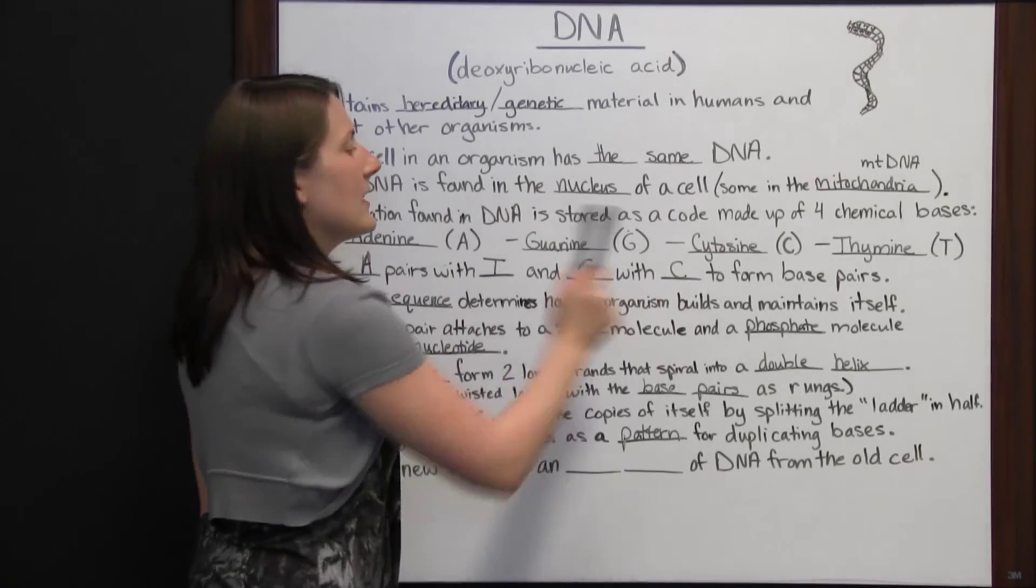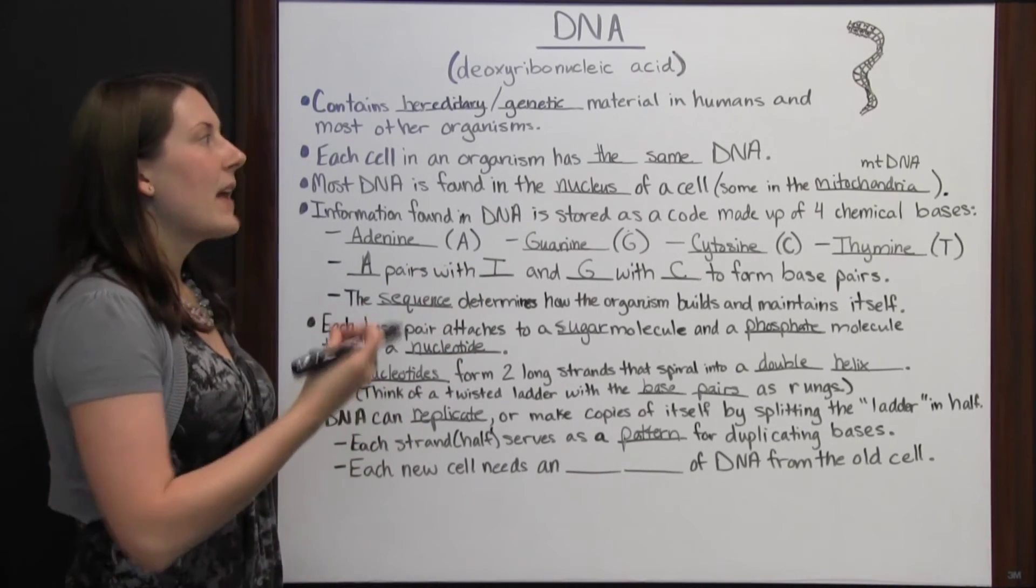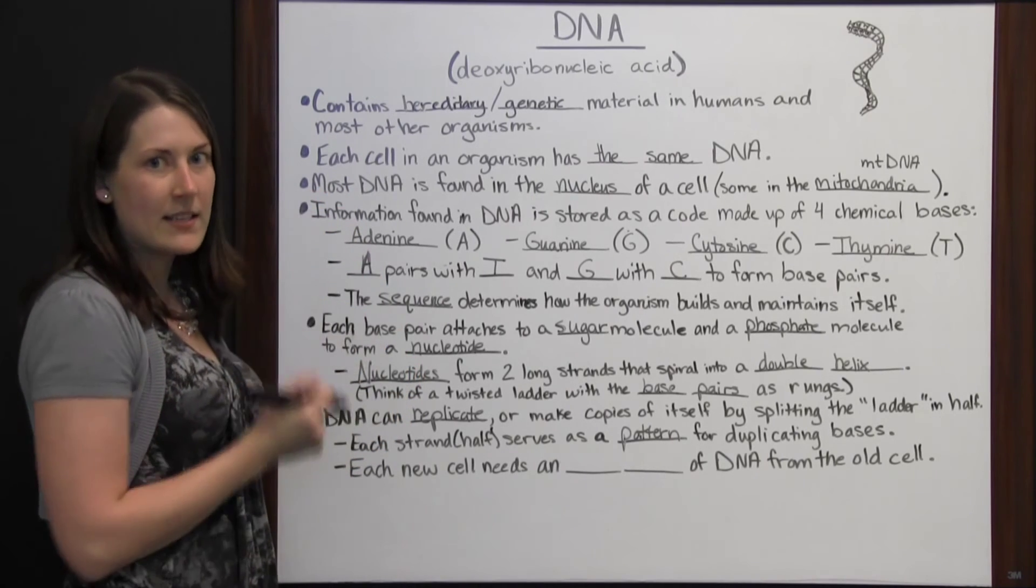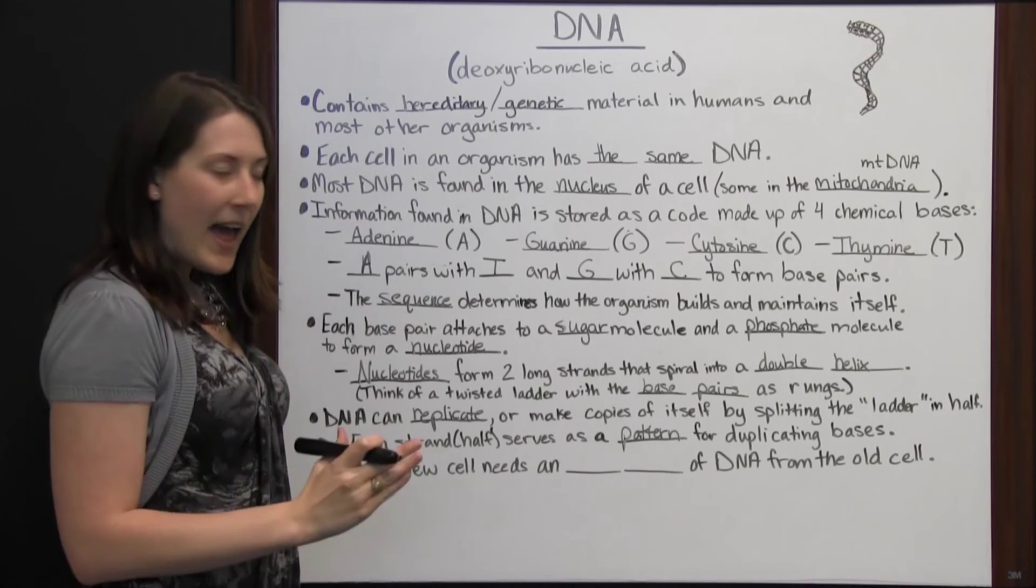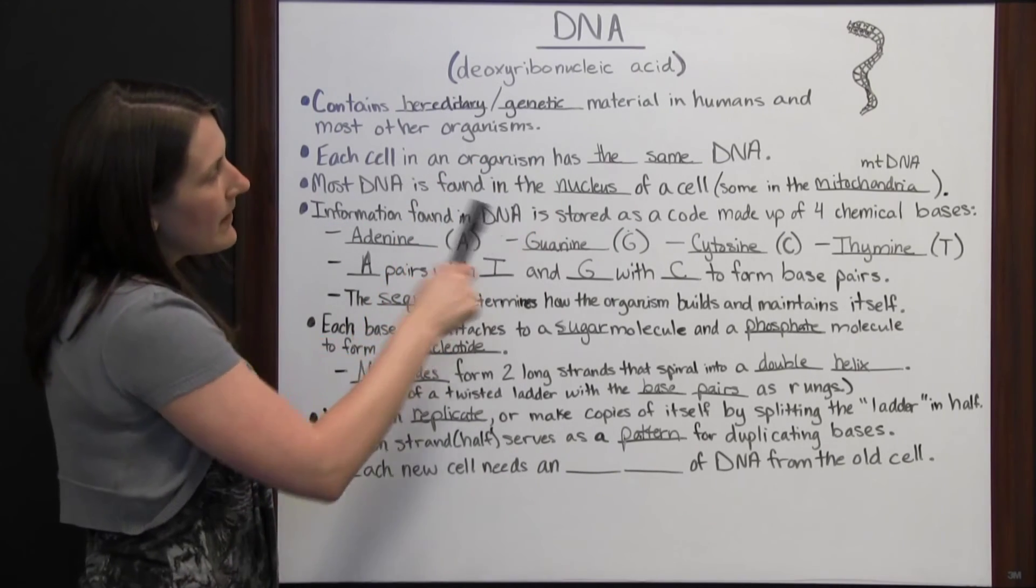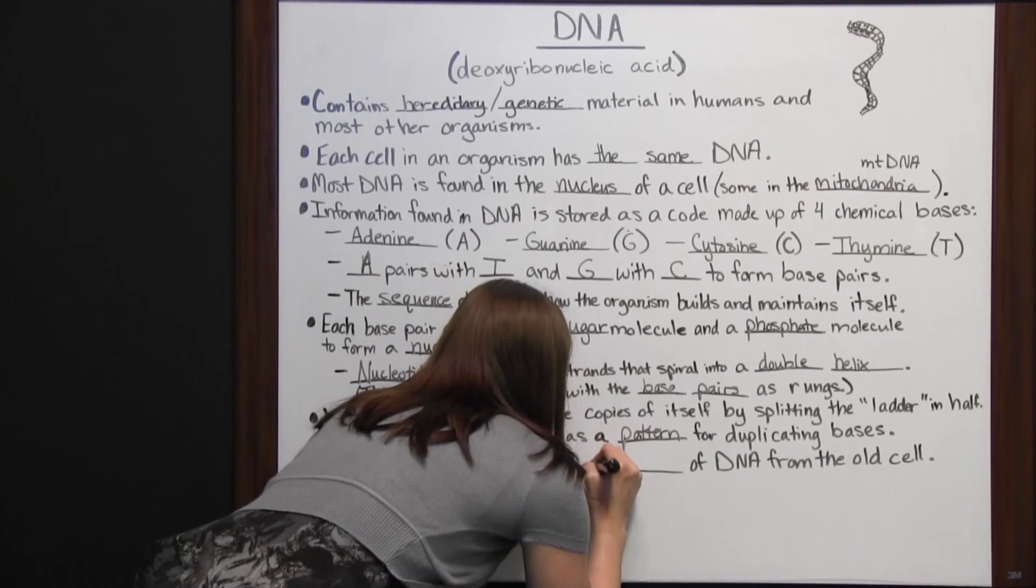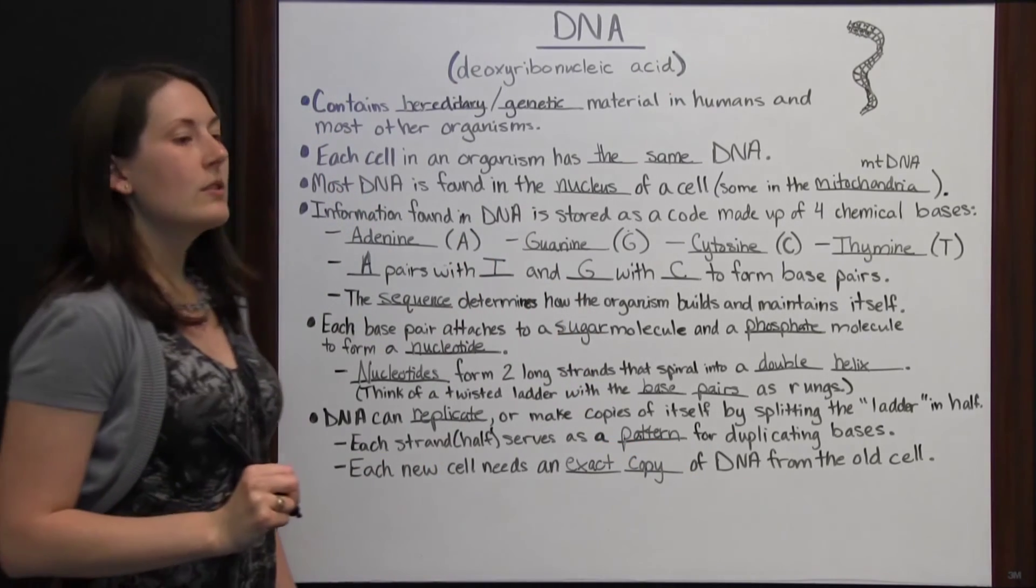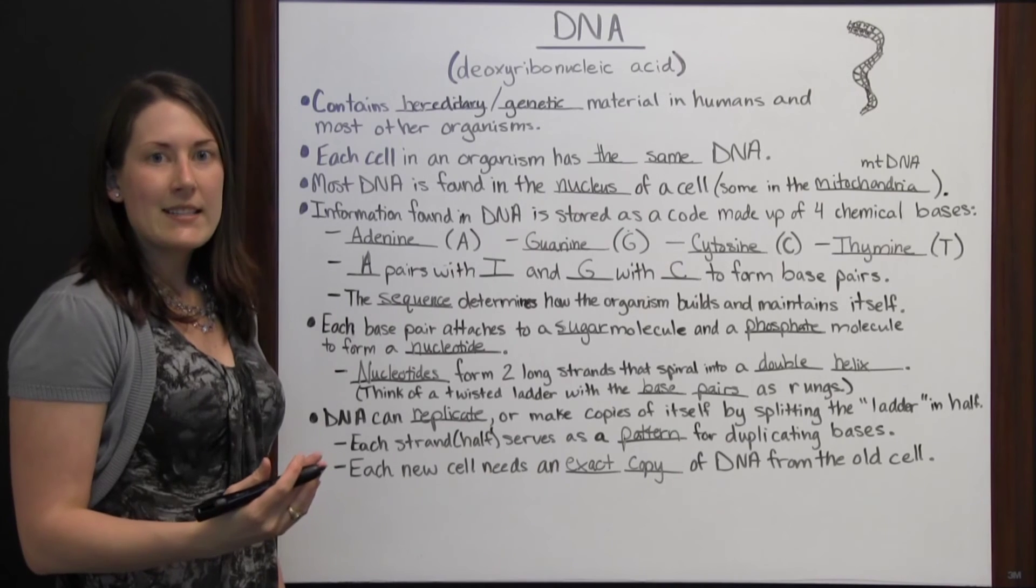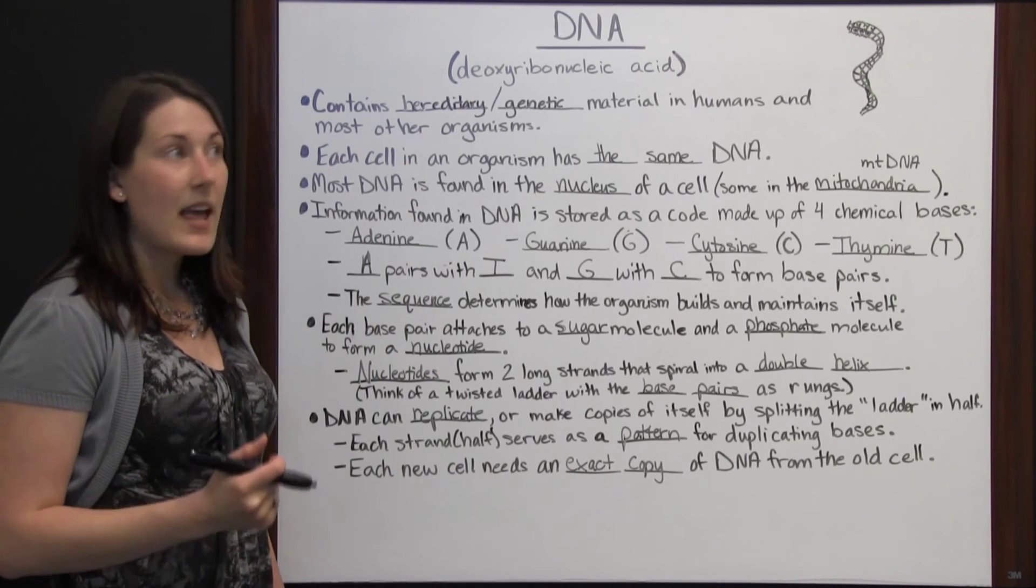Since in DNA, adenine and thymine always pair together and guanine and cytosine pair together, you will know, or the cell will know, okay, I've got this DNA, I've only got half of it, but it's a pattern. If I have adenine, I need to add thymine to the other side. If I've got cytosine, I need to add guanine to the other side. The cell will know, based on that half, that strand that it gets from DNA, how to make a complete DNA molecule and be able to form that double helix and complete the DNA strand. Each new cell needs an exact copy of DNA from the old cell, because, remember, each cell in an organism has the exact same DNA. If the DNA is replicating itself, it needs to be giving an exact copy to a new cell so that this can continue, and the organism is going to continue to have the same DNA in it.